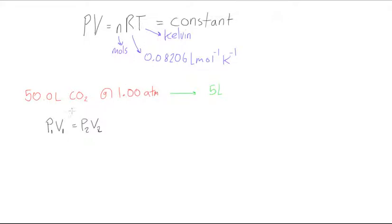So let's start filling in values and see what happens here. We have our pressure, our P1 is one atmosphere, so we have 1.00 atmospheres, and this is going to be times our initial volume V1 which is 50 liters, 50.0 liters.